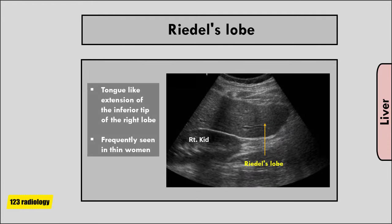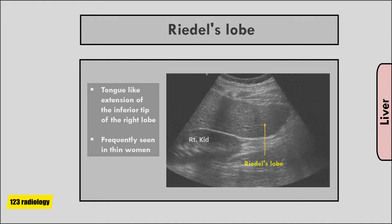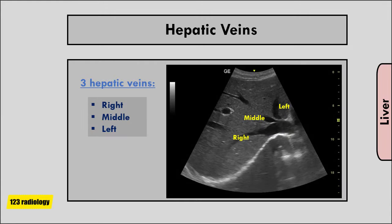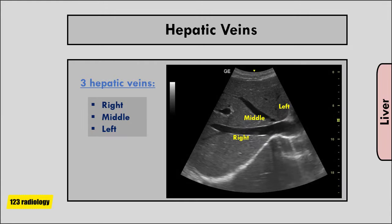Riedel's lobe is a tongue-like extension of the inferior tip of the right lobe of the liver, and this is frequently seen in thin women.